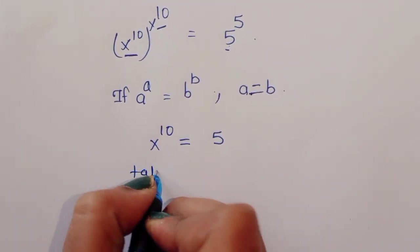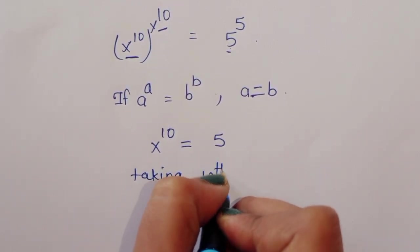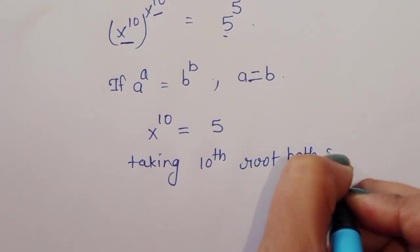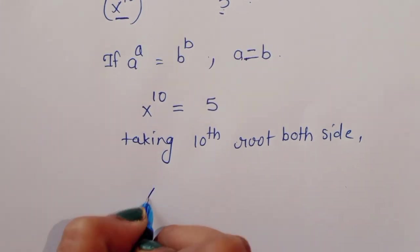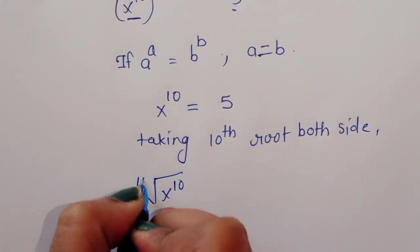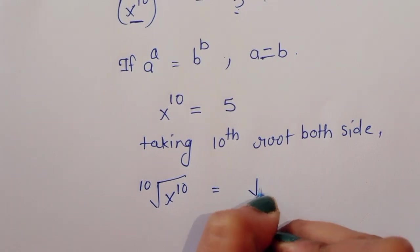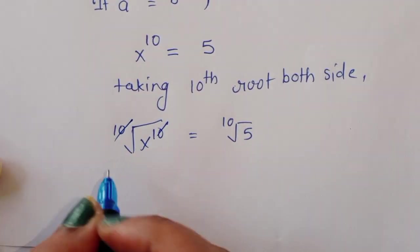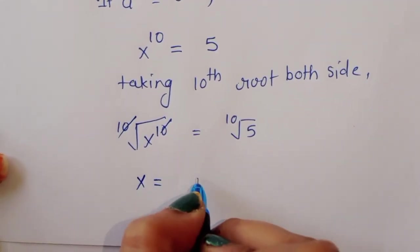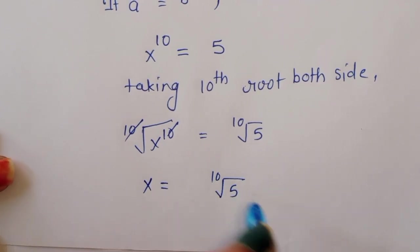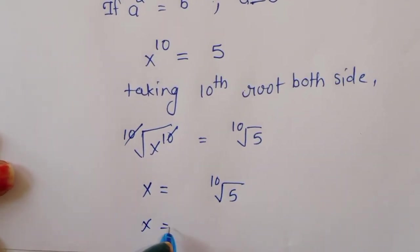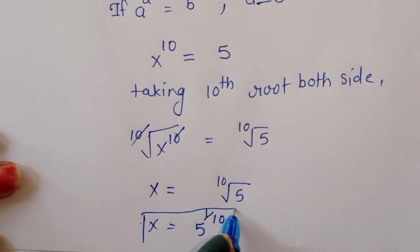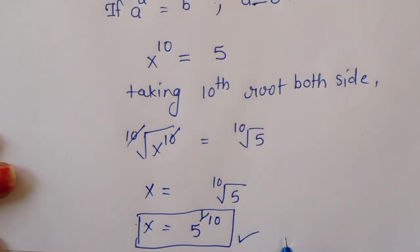Now taking the 10th root of both sides: the 10th root of x power 10 is equal to the 10th root of 5. The powers cancel, giving x is equal to 5 raised to 1 by 10. This is the value of x. Now let's verify this value.